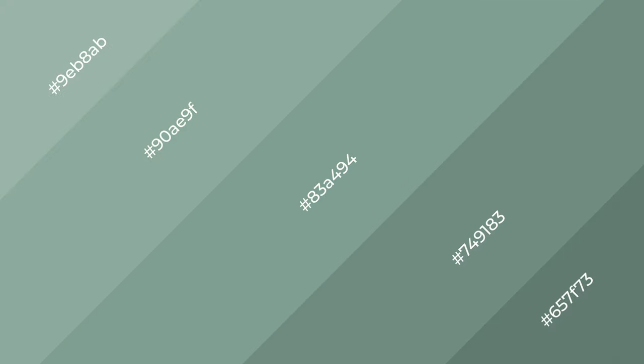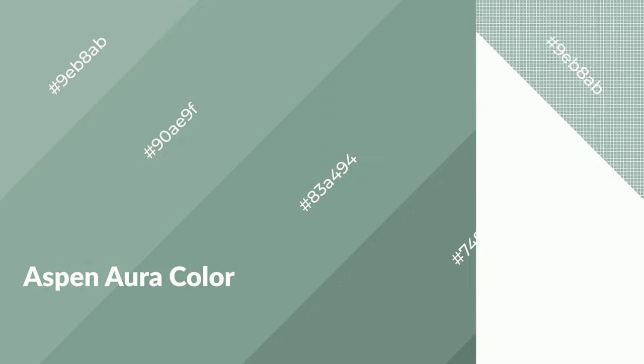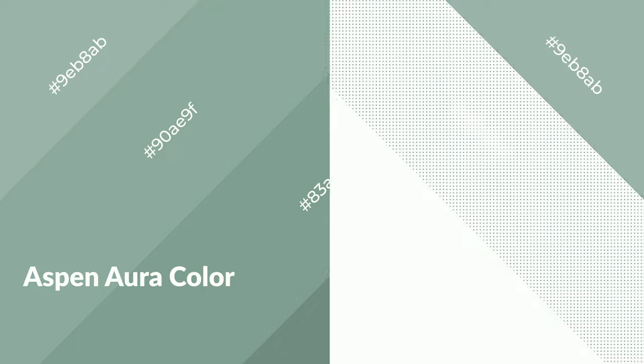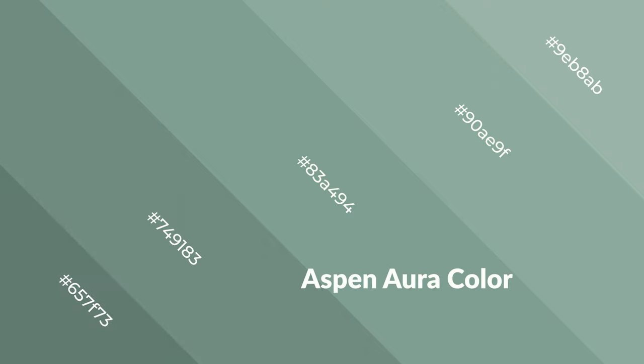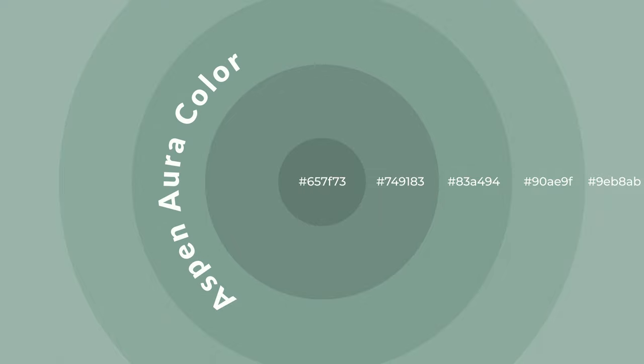Aspen Aura is a cool color and it emits calming, serene, soothing, refreshing, spacious, unwinding, peaceful, and relaxed emotions. Cool colors are like water, ice, sky, grass, soft snow — you can see them used in baby products.